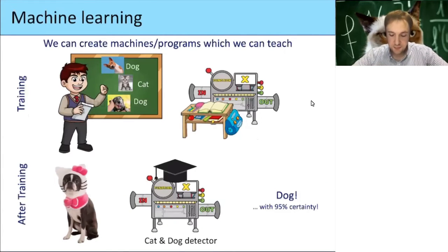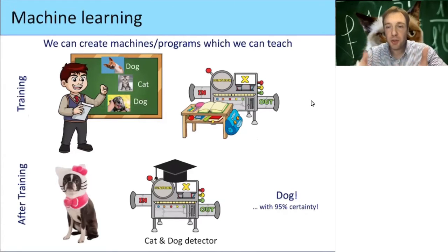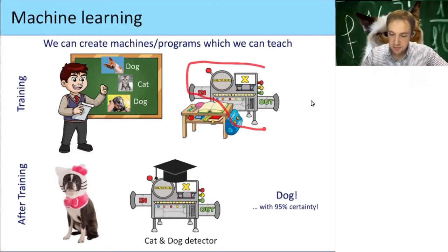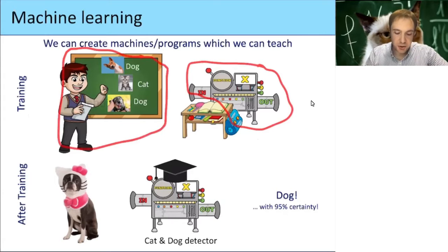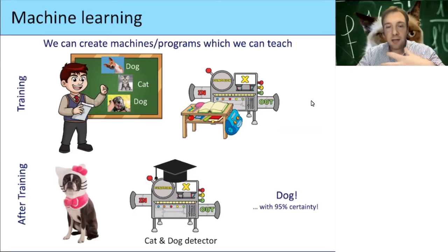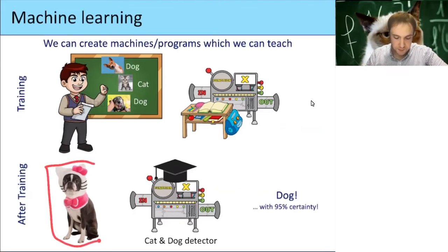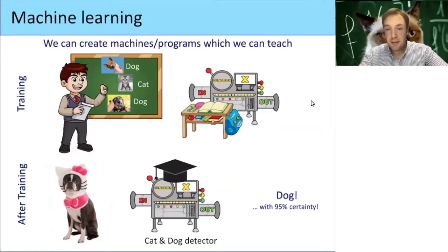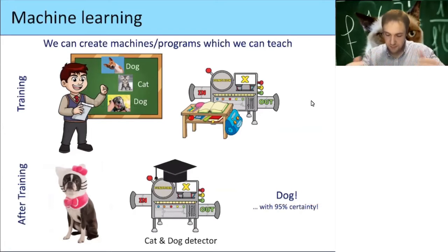The idea of machine learning is that we create algorithms we can also teach, just like our parents taught us. Instead of describing the solution directly — how to decide what is a cat or a dog — we create a machine that can learn. We train it by showing it many pictures of cats and dogs, always saying 'this is a dog, this is a cat.' After training, if we give it a new input, it can decide if it's a cat or a dog, usually with a certain certainty — for example, 'this is a dog with 95% certainty.'